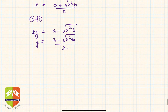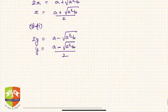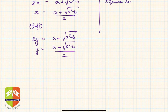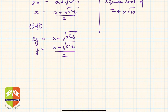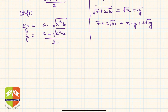Let us take an example. Find the square root of 7 + 2√10. We assume √(7 + 2√10) = √x + √y. Squaring both sides: 7 + 2√10 = (x + y) + 2√(xy). Comparing: x + y = 7 and xy = 10.